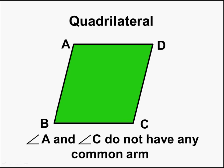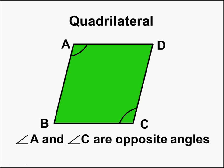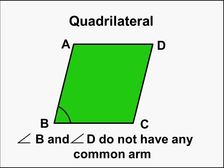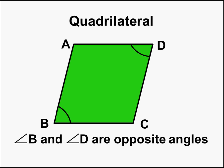Understood? Now, if we talk about angle A and angle C, do they have any common arm? Angle A has arms AD and AB, and angle C has arms CD and CB. Hence, they do not have any common arm. Such angles are called opposite angles. Hence, angle A and angle C are opposite angles. Similarly, angle B and angle D also do not have any common arm, hence angle B and angle D are also opposite angles.